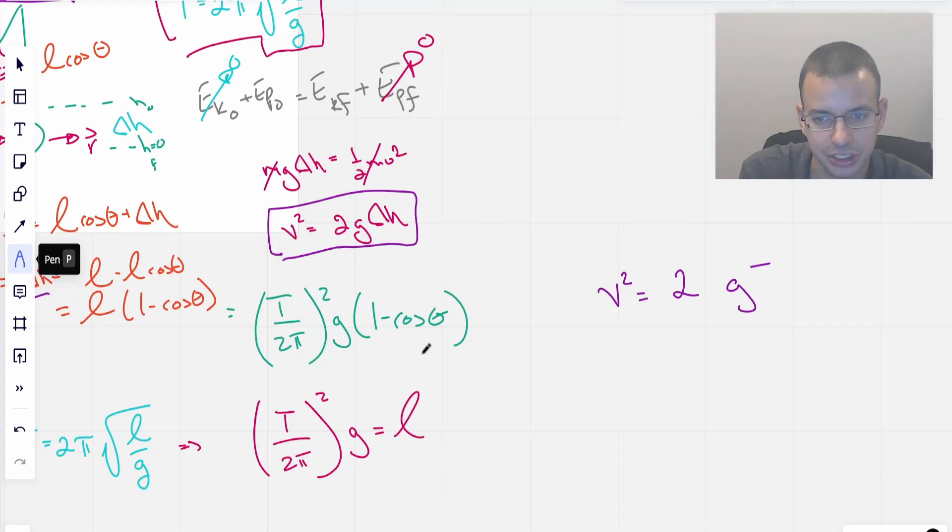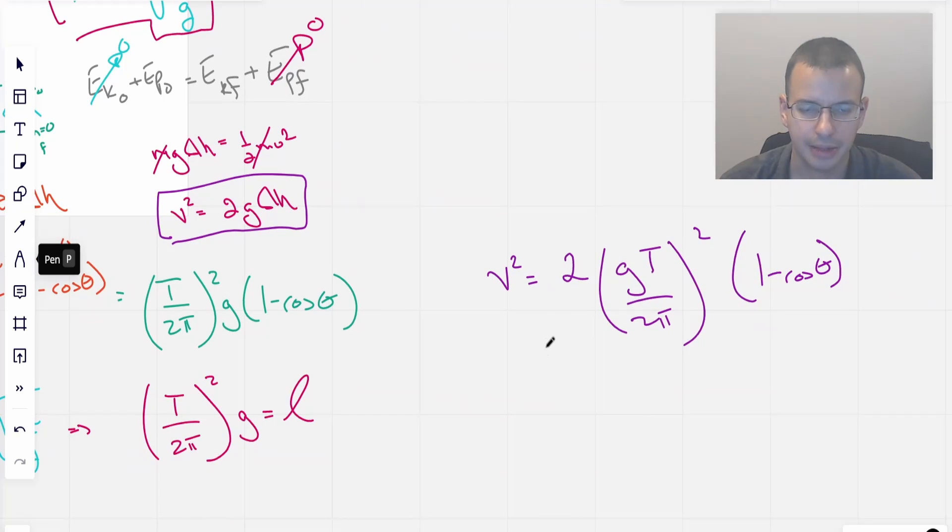And so we can say velocity squared is 2. I'm going to take this G and move it in there. I know, it's going to be a lot of steps all at once. T over 2 pi squared, 1 minus cosine of theta. Yeah, that might work. And then, so now, we know everything here except for velocity, which is what we solved for.